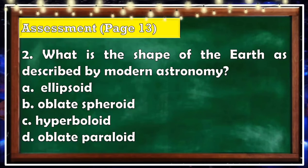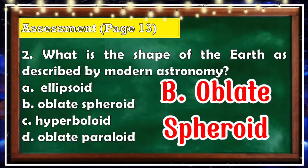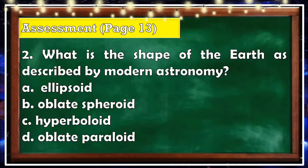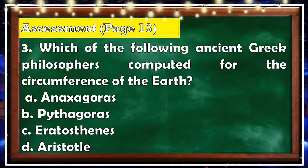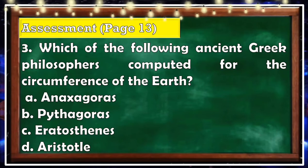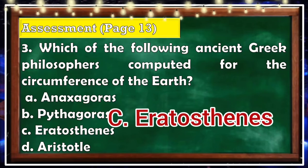Number 3: Which of the following ancient Greek philosophers computed for the circumference of the Earth? A. Anaxagoras, B. Pythagoras, C. Eratosthenes, D. Aristotle. The correct answer is Letter C — Eratosthenes. Number 4: During which time did Eratosthenes observe the shadows cast by a vertical stick? A. Noontime in summer solstice, B. Noontime in winter solstice, C. During a lunar eclipse, D. During a solar eclipse. The correct answer is Letter A — Noontime in summer solstice.